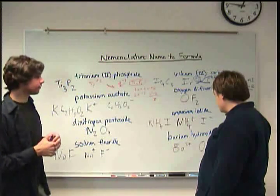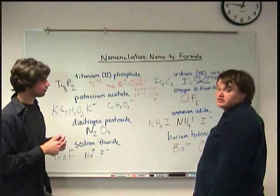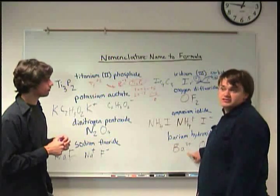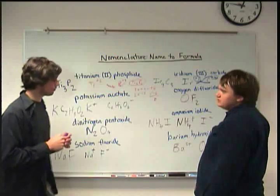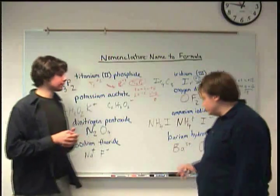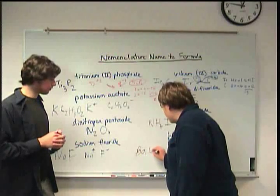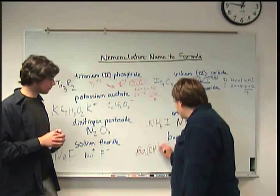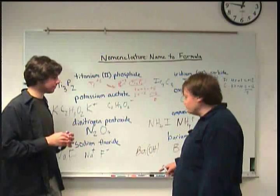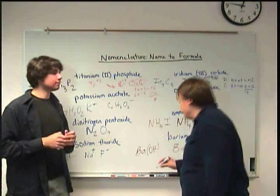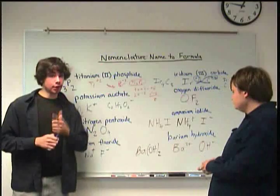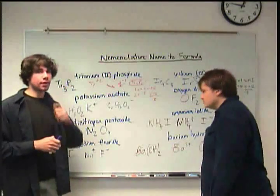If that's a minus one, I need to neutralize this plus two. I would need two of these to cancel out this plus two. So that would be Ba, and then parentheses—remember parentheses because it's one thing—two.